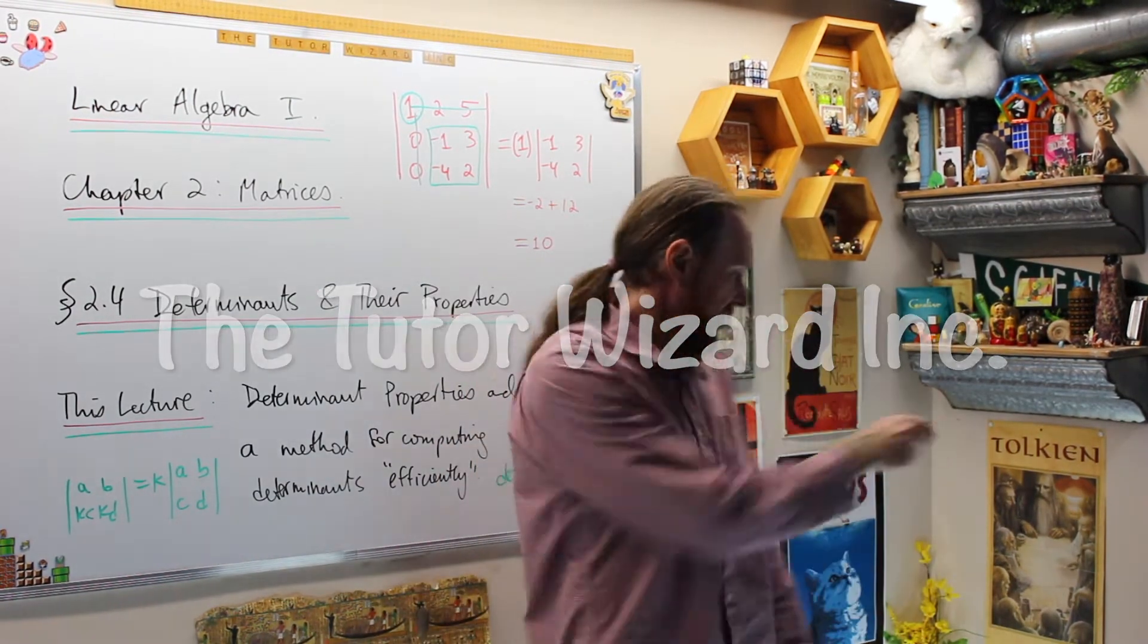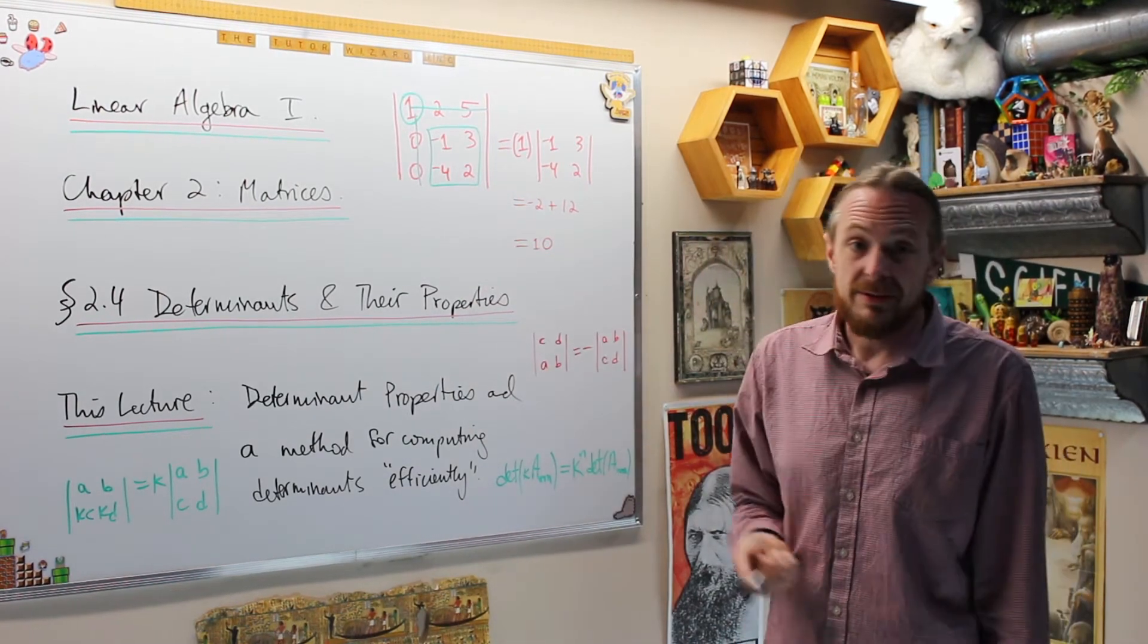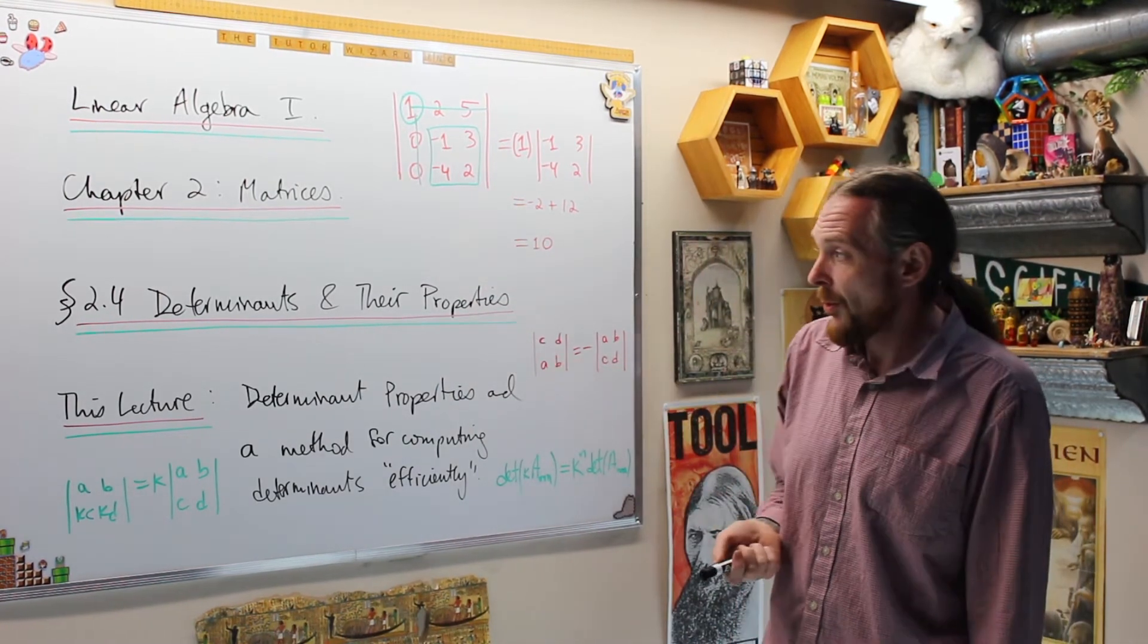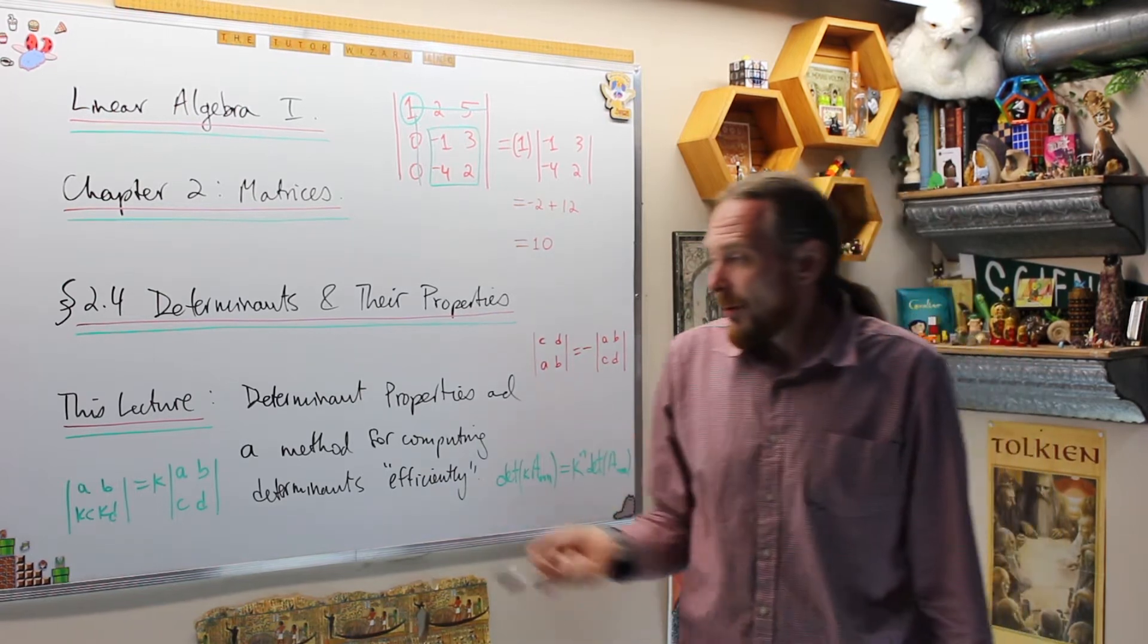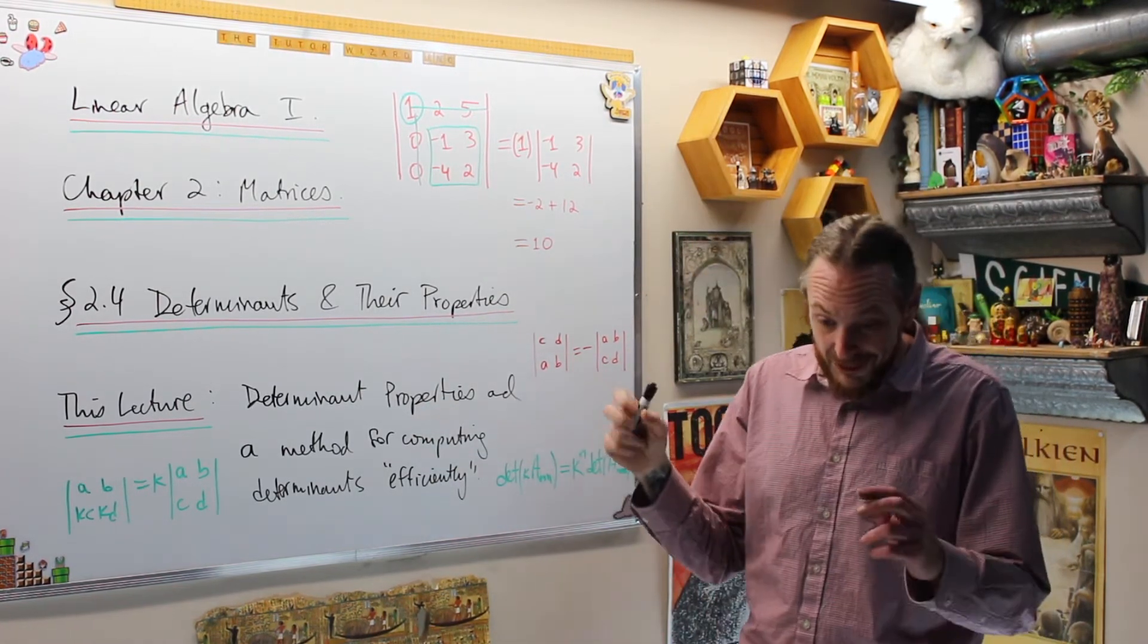Welcome back. This is the TutorWizard. I'm Adrian. Please subscribe right here, hit the notification bell. We're doing Linear Algebra 1, Chapter 2, Matrices. Section 2.4 is Determinants and Their Properties. In this lecture, what we're going to do is determinant properties and the methods for computing determinants efficiently.